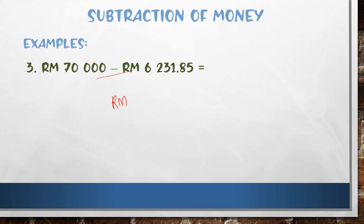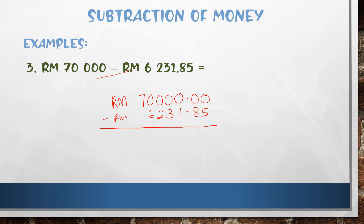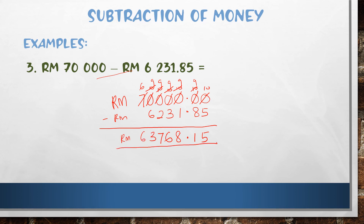Example three: seventy thousand minus six thousand two hundred thirty-one ringgit thirty-one sen. We change this mathematical sentence to the standard method. Write seventy thousand first, then don't forget to write the decimal point and sen. Write eight and five — then one, three, two, six. Don't forget to write RM and then minus.